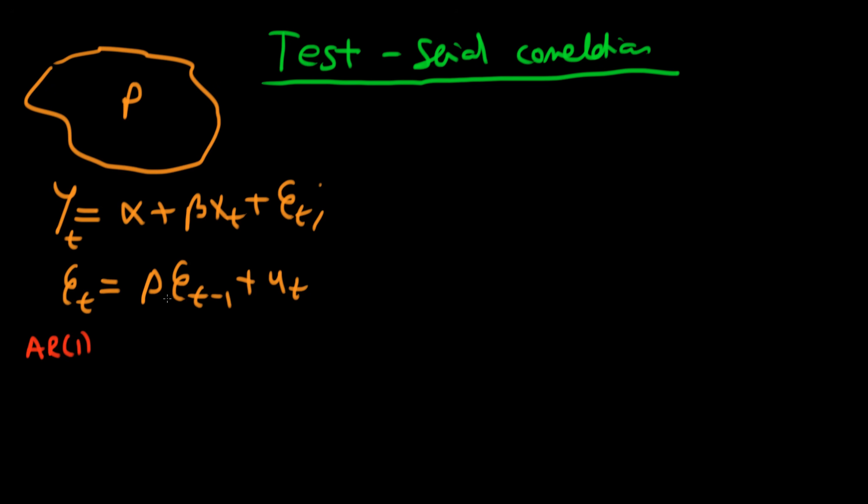We have serial correlation if our coefficient rho doesn't equal zero in the population. That specifies our population process.